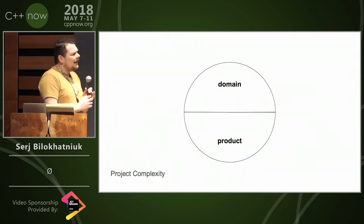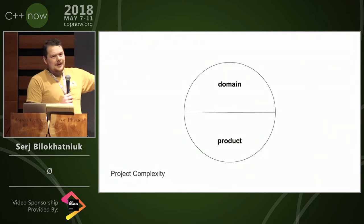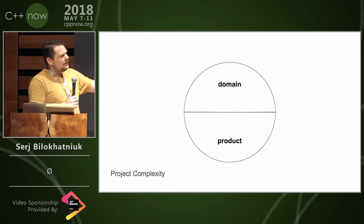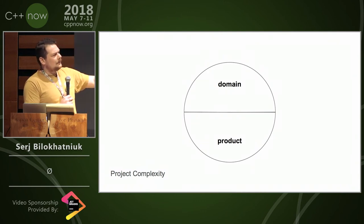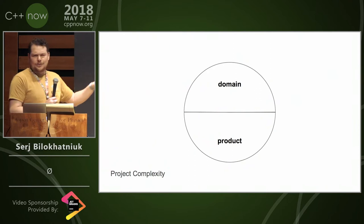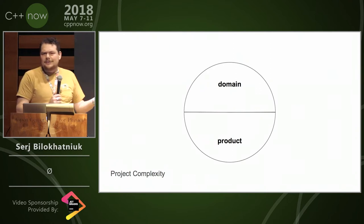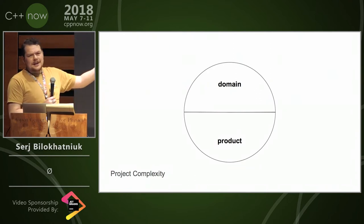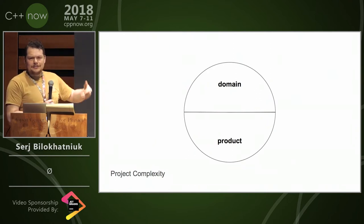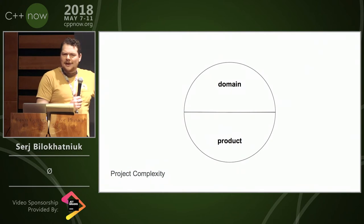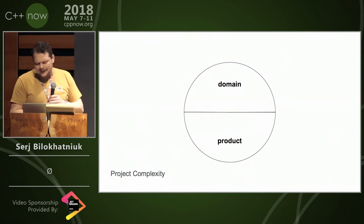You put it all together and you get project complexity. I like to draw it like this — it doesn't imply that they're equal or normalized, so the complexity of the product proportionally reflects the complexity of the domain. I think it's healthy and normal, that's how we imagine it: whatever we're solving has entropy, and we produce another entropy on the other end and simplify it as output.